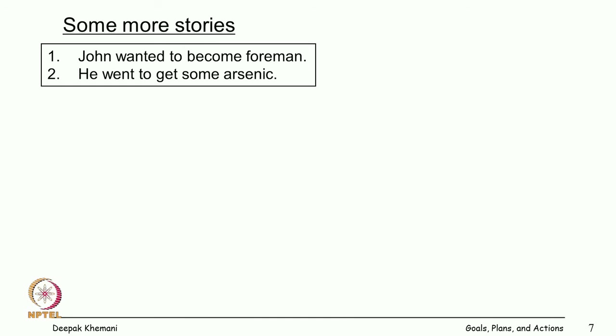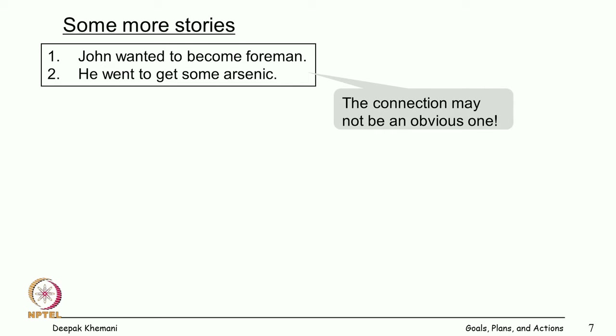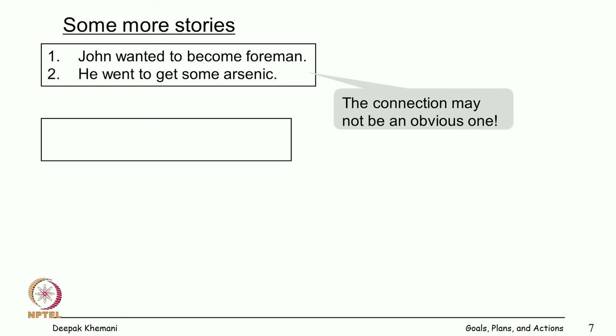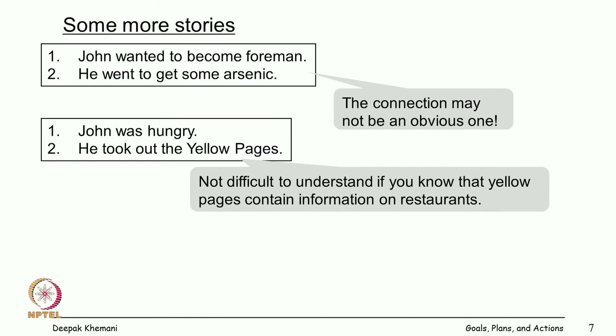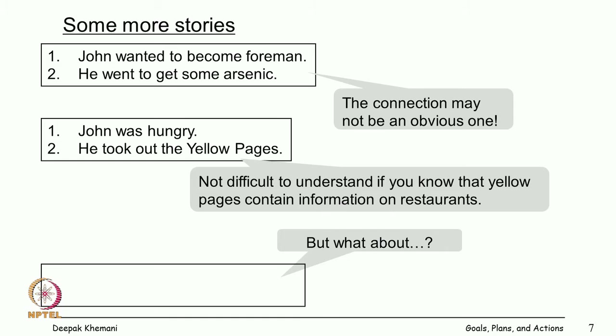John wanted to become a foreman and he went to get some arsenic — the connection is not obvious. Or: John was hungry and he took out the yellow pages — that is not so difficult because yellow pages may contain information about restaurants. But what about 'John was hungry and he took out Popular Mechanics'? Some stories are simpler to understand, some are harder, and PAM can understand some of the simpler ones.